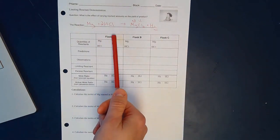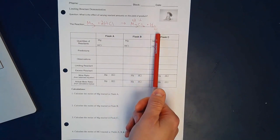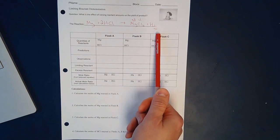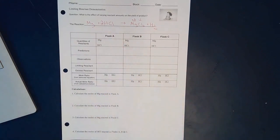1 magnesium plus 2 hydrochloric acids gives us magnesium chloride and hydrogen gas, which is H2. So each side has 1 magnesium, 2 hydrogens, and 2 chlorines. That's a balanced equation. So now I'm going to talk about how we set this up.